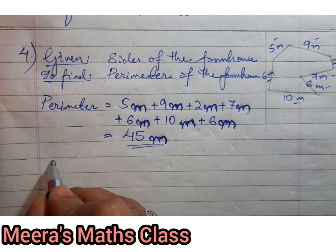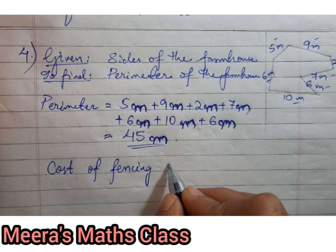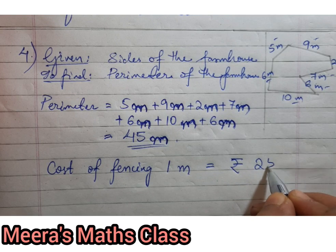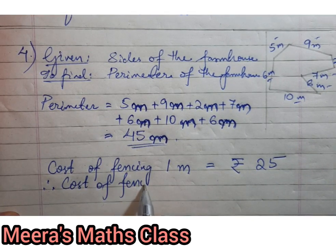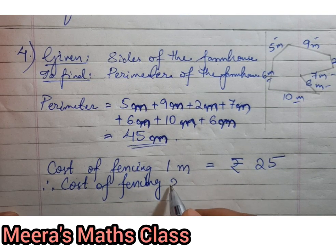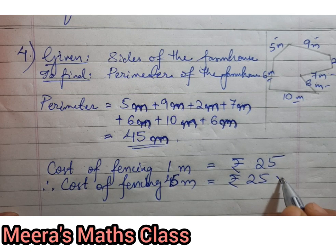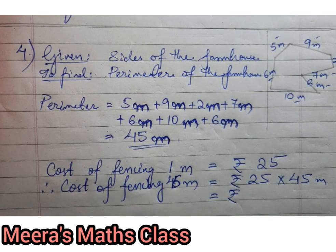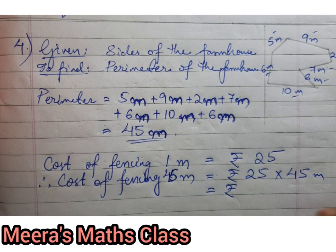It is given: cost of fencing one meter is equal to rupees 25. Therefore, cost of fencing 45 meter is equal to rupees 25 into 45 meter. This will be in rupees because we are going to find out the amount cost. How much it is? So 25 into 45, you can just go for calculating here.